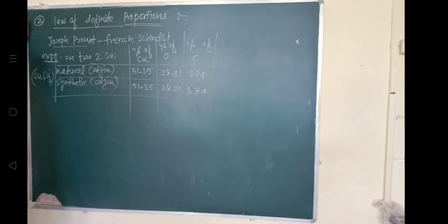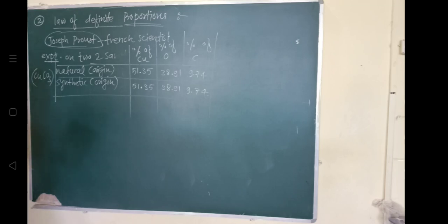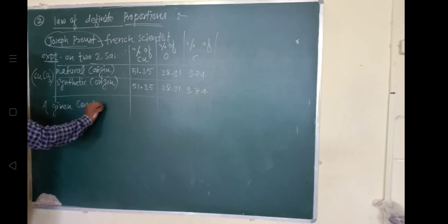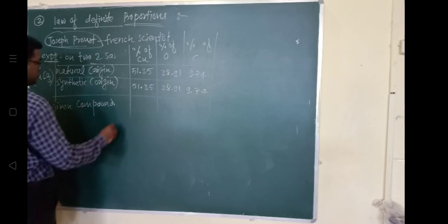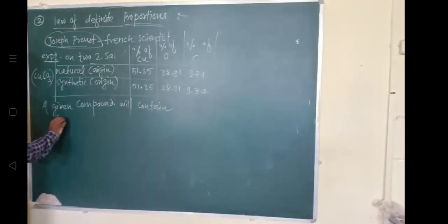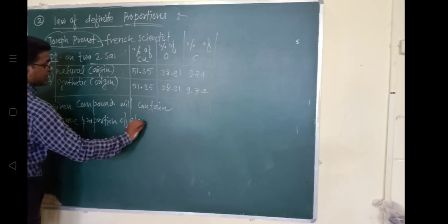And this gives rise to the Law of Definite Proportions, given by Joseph Proust. A given compound always contains exactly the same proportion of elements — the same proportion of elements will be there.